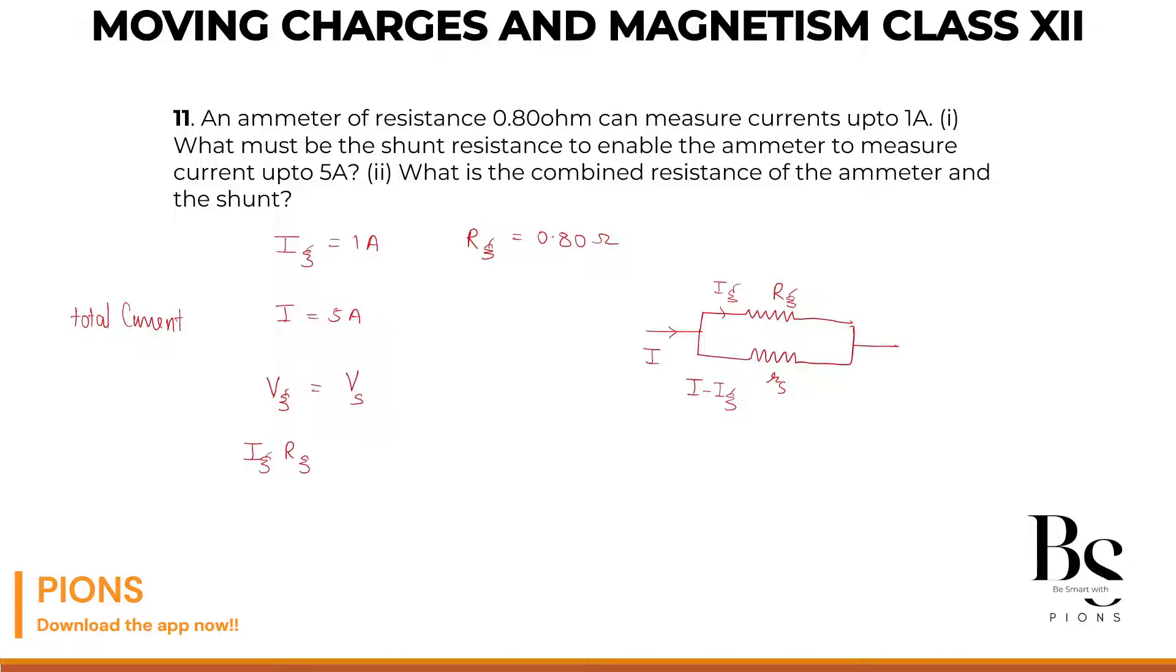And voltage across the shunt will be current across the shunt, which is I minus IG, into the shunt resistance. Now we have to calculate this RS. That will equal IG times RG divided by I minus IG.